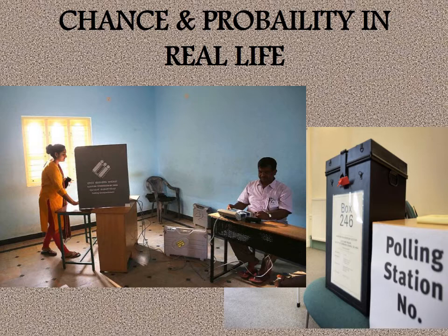We can observe various examples of chance and probability in real life. One such example is during elections, where an exit poll is taken. This involves asking people whom they voted for as they come out after voting at centers chosen at random and distributed over the whole area. This gives an idea of the chance of winning of each candidate, and predictions are made accordingly.